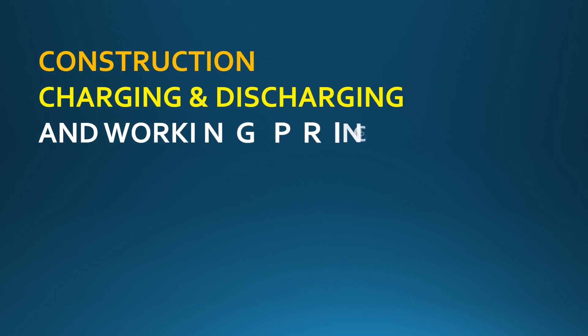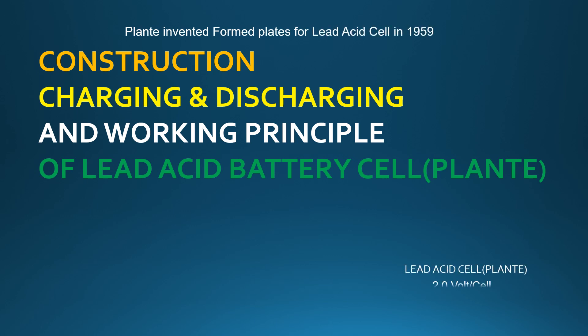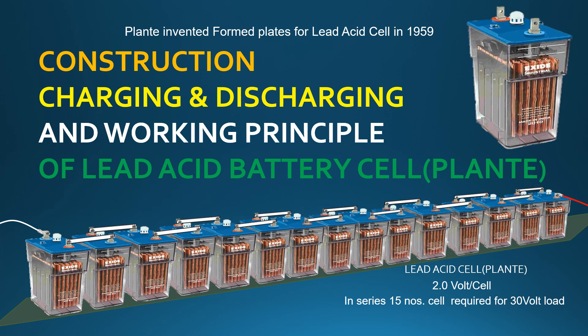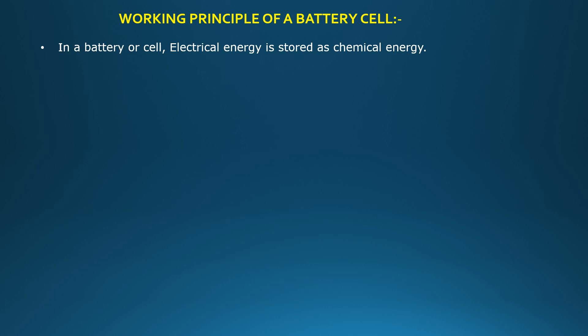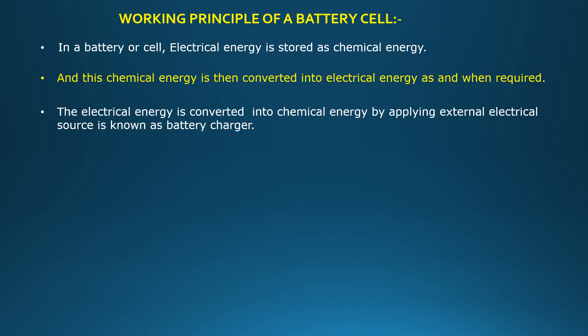Today I have come to describe the construction, charging, discharging, and working principle of a battery cell. In a battery or cell, electrical energy is stored as chemical energy, and this chemical energy is then converted into electrical energy as and when required. The conversion of electrical energy into chemical energy by applying an external electrical source is known as battery charging.